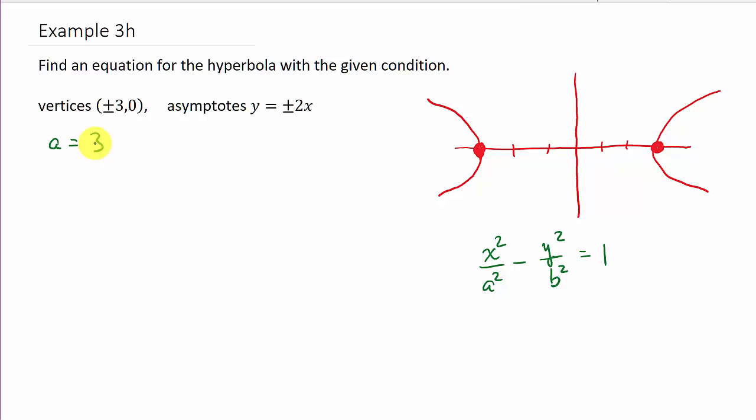Well, now all we need to do is find B. Well, the asymptote, remember, the asymptote is Y equals plus or minus B over A times X. So we know that the B over A, well, A is 3. So B over 3, we just replace the A with a 3. That is this part right here is equal to 2. So this equals 2, and now we just solve for B. So this tells us that B is equal to 6.